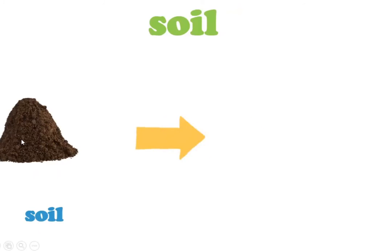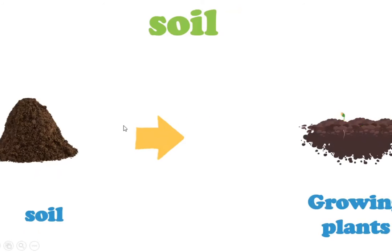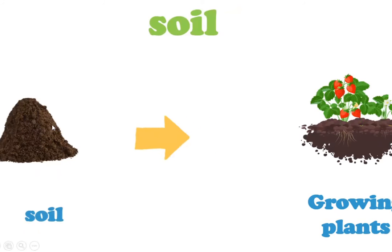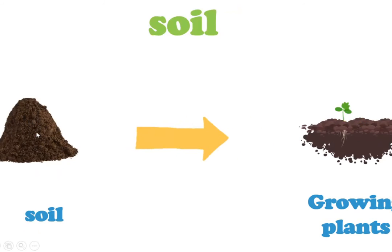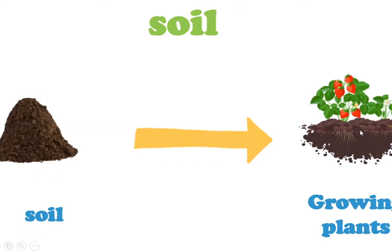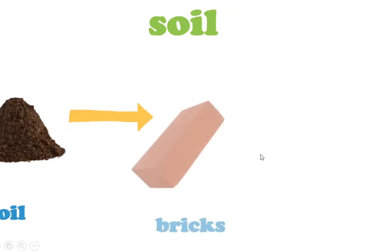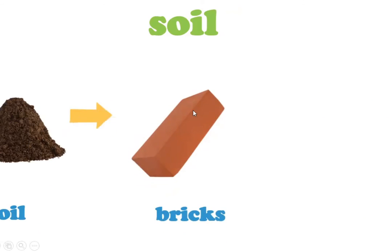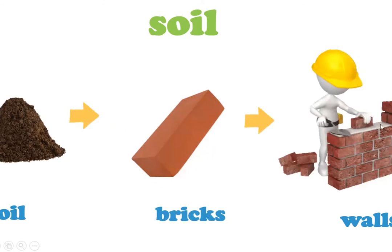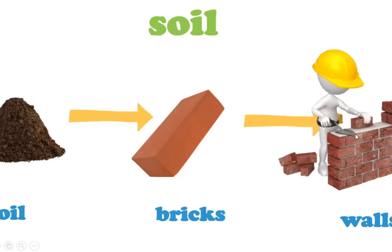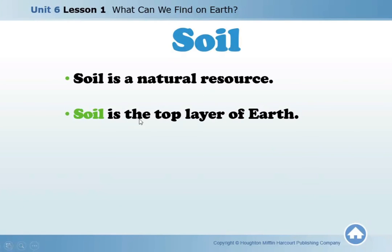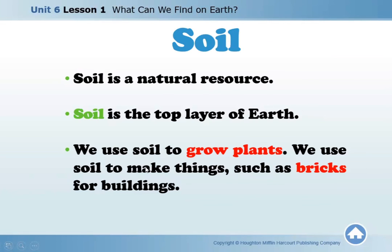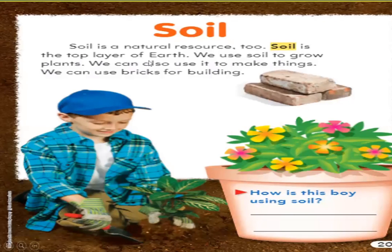Another natural resource is soil. We use soil for growing plants. The best soil for growing plants is called loam, and it is dark or black in color. We also make bricks from soil by adding water and forming it into brick shapes. We use those bricks to make walls and houses. Soil is a natural resource — it is the top layer of the earth. We use soil to grow plants and to make things such as bricks for buildings.